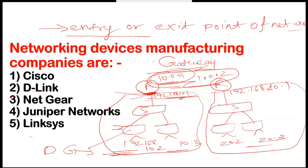So just understand it like this — entry or exit point of the network is known as default gateway. We need this default gateway when we set the IP address. We have to identify which is the entry or exit point of the network. Firstly, you have to understand the topology, and from this topology you can see that this is the entry or exit point, so that is the default gateway.